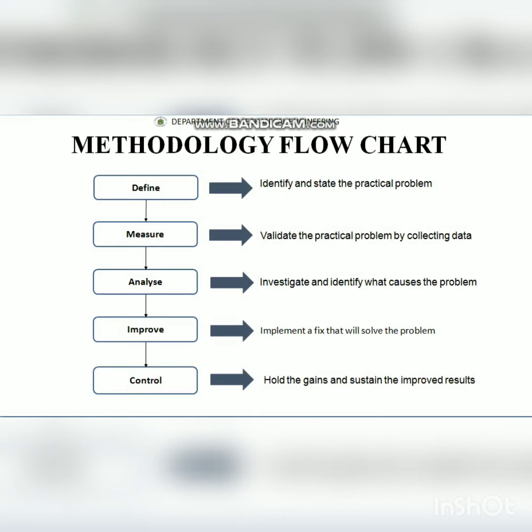In the Analyze phase, we investigate and identify what causes the problem — that means identifying the root cause or source factor. The next step is Improve, where we implement a fix to solve the problem by applying the Six Sigma process using formulas like DPMO. Finally, the Control phase involves holding the gains and sustaining the improved results that have been achieved.